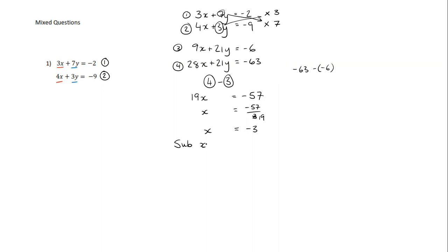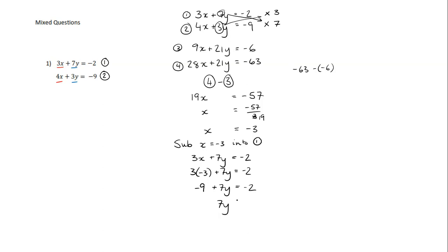Once I've got x, I can substitute that back into any of my equations — I'm going to choose equation 1. So 3x plus 7y equals negative 2 becomes 3 times negative 3 plus 7y equals negative 2. That's negative 9. Letters left, numbers right — so it's negative 2 add 9, giving 7y equals 7. Y equals 7 over 7, so y equals 1. State both answers: x equals negative 3 and y equals 1.